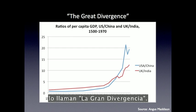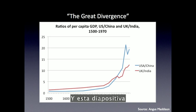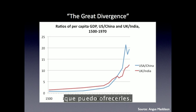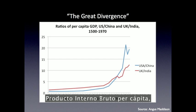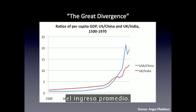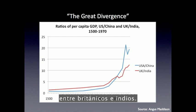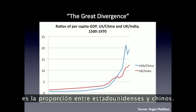Economic historians call this the Great Divergence. And this slide here is the best simplification of the Great Divergence story I can offer you. It's basically two ratios of per capita GDP — per capita gross domestic product, so average income. One, the red line, is the ratio of British to Indian per capita income, and the other, the blue line, is the ratio of American to Chinese.